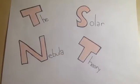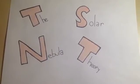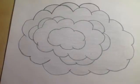The solar nebula theory talks about the formation and evolution of our solar system. Our solar system formed five billion years ago.